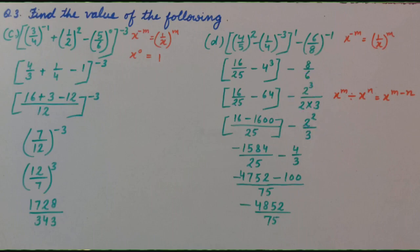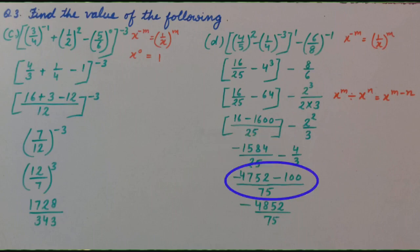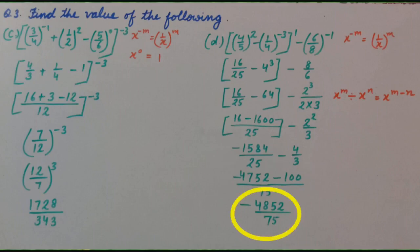Hence we get minus 1584 upon 25 minus 4 upon 3. And when we solve it according to rational numbers, we get minus 4852 upon 75.